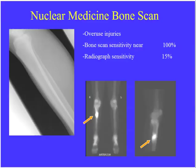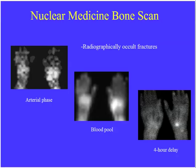Here's a nice board example: a runner with tibial pain and an overuse injury where the plain film is normal. We see a linear area of increased uptake on the bone scan — this represents a stress fracture. When we do a nuclear medicine bone scan, we usually do a three-phase study. The first phase is an arterial phase — we scan over the area of interest in the first few seconds. Then over the next two to three minutes, we get a blood pool or venous phase. Finally, a delayed scan about four hours later shows activity now in the bone. Here we see a radiographically occult scaphoid fracture.